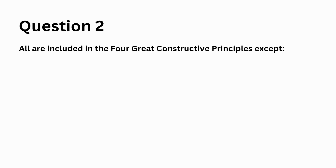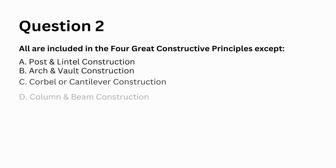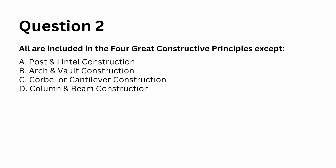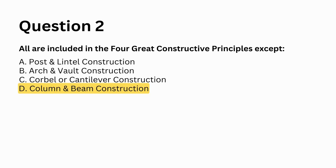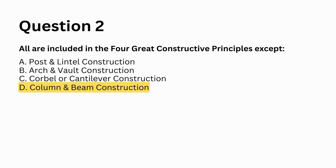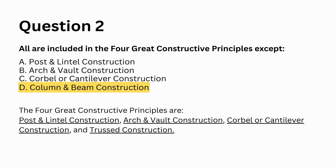All are included in the four great constructive principles except: a. Post and lintel construction, b. Arch and vault construction, c. Corbel or cantilever construction, d. Column and beam construction. Answer: d. Column and beam construction. The four great constructive principles are post and lintel construction, arch and vault construction, corbel or cantilever construction, and truss construction.